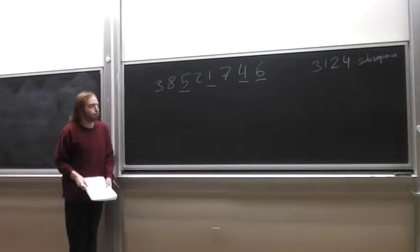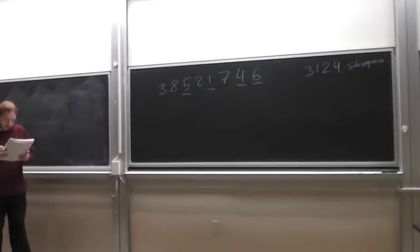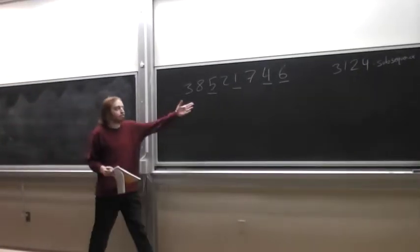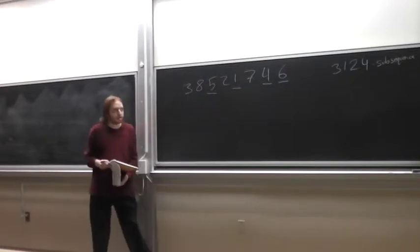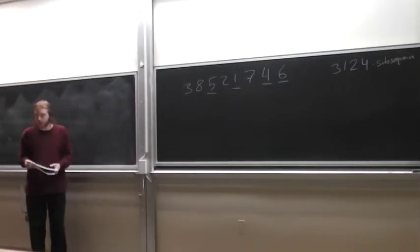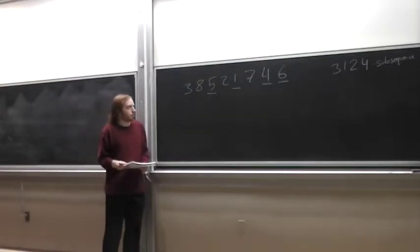And that 3, 1, 2, 4 represents the relative order of those terms. And if a permutation has a subsequence like this, we'll say it matches the pattern 3, 1, 2, 4. And if it doesn't have one, we'll say it avoids the pattern. So this one matches the pattern 3, 1, 2, 4.